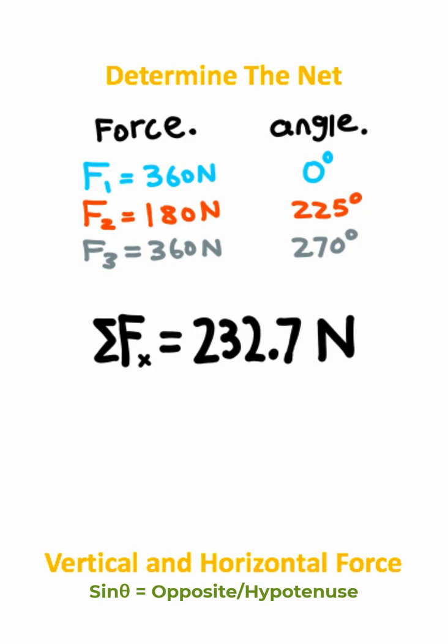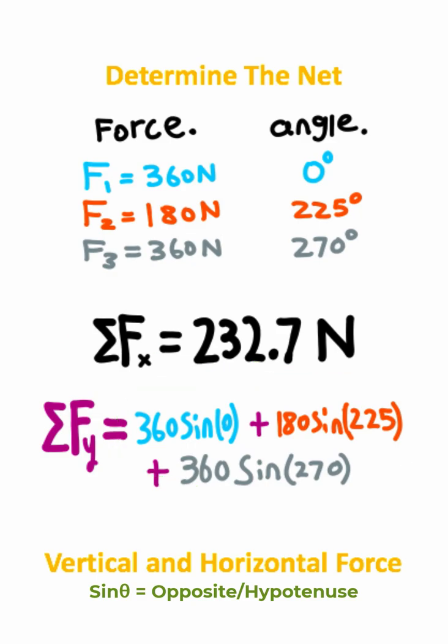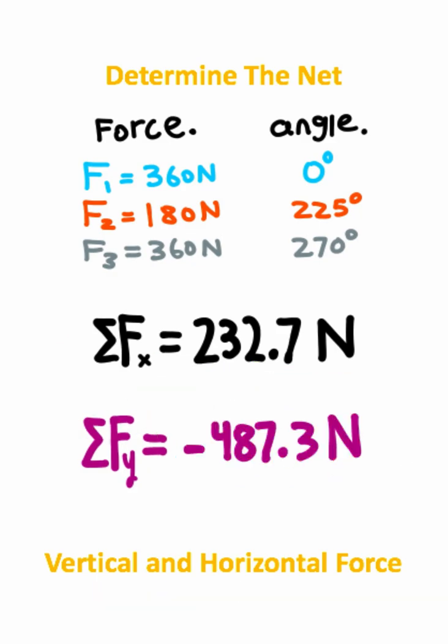Now if you want to calculate the sum of forces in the y-direction, you can do the same thing, except this time with the sine. Again, if you add all these numbers together on your calculator, you should get negative 487.3 newtons.